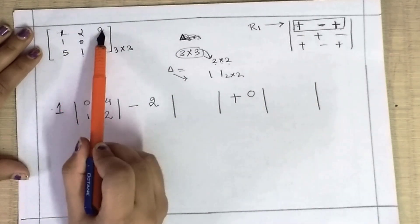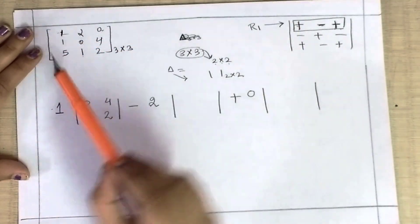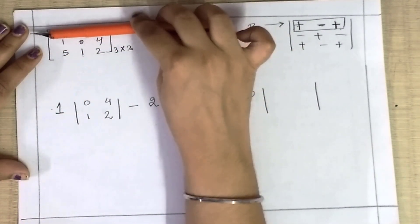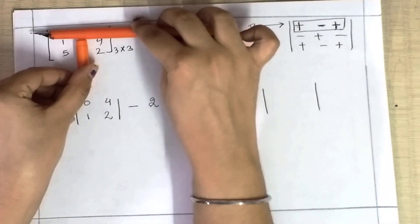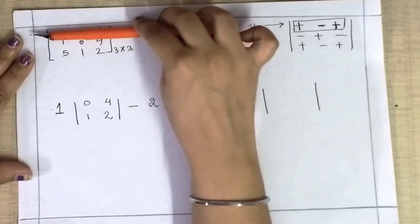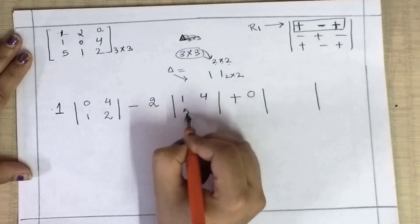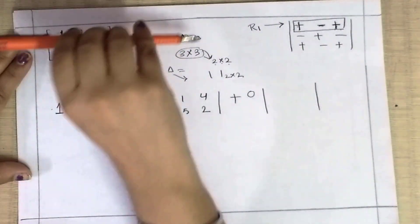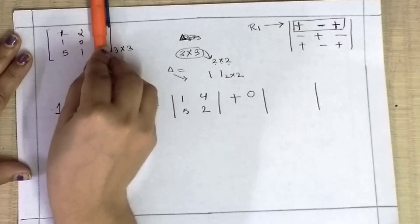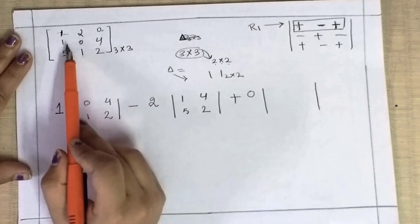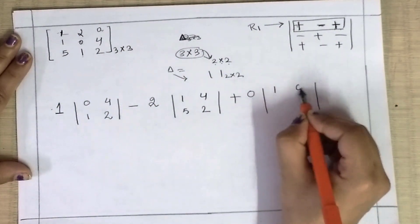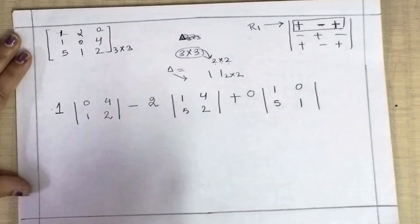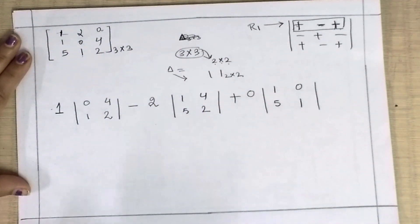For the second element — which is in the first row, second column — you hide the first row and the second column. The remaining values visible are 1, 4, 5, 2 — exactly these four go into the 2×2 determinant. Similarly for the third element in first row, you hide that column and the first row, and the remaining four elements are written. If this is not clear, please see the previous videos I have provided in the description box.